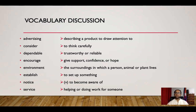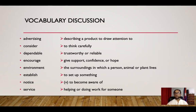Dependable means trustworthy or reliable — for example, if I can depend on you, you are dependable. Encourage means to give support and provide confidence to people, or to give them hope — it's like saying 'yes, you can,' asking people to do more, giving advice not to give up. Environment is the surrounding in which we live — the surroundings of a person, animal, or plant. Establish means to set up something, for example to start or create a company.